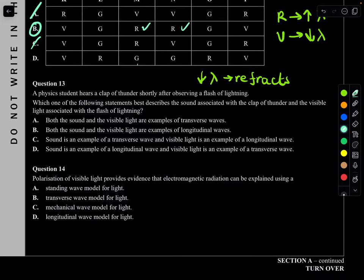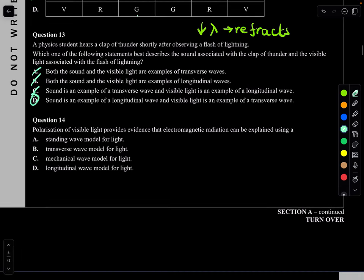Question 13. A student hears thunder shortly after seeing lightning. Sound wave is a longitudinal wave; visible light is a transverse wave. A says both are transverse — wrong. B says both are longitudinal — wrong. C says sound is transverse — wrong. D says sound is longitudinal and visible light is transverse — correct. D is the answer.